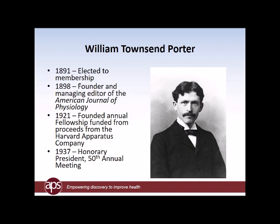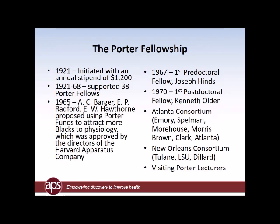However, up until 1967 or 1968, the Porter Fellowship was directed to majority scientists, both male and female, and from 1921 to 1968, 38 Porter Fellows had been selected. In 1965, A. Clifford Barger — for whom the Porter Committee provides the Barger Mentoring Award — along with Ed Radford and Ed Hawthorne, proposed using Porter funds to attract more Black scientists to physiology. It was approved by the Harvard Apparatus Company and by the council, and our first Porter Minority Fellow, a pre-doctoral fellow, was made in 1967 to Joseph Hines.